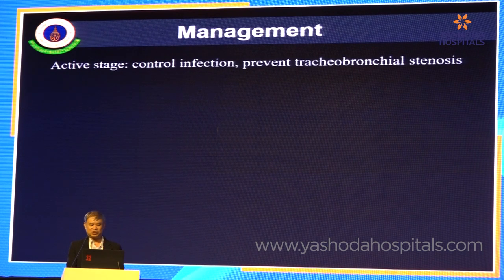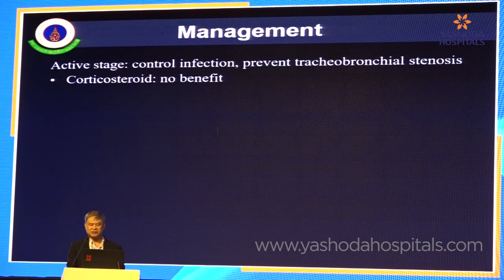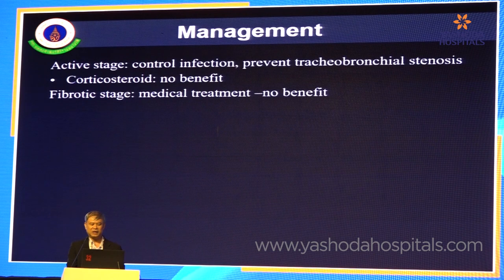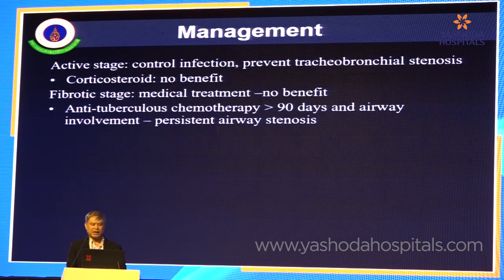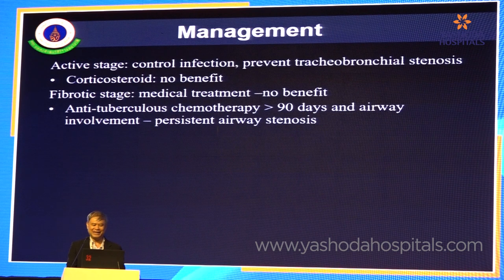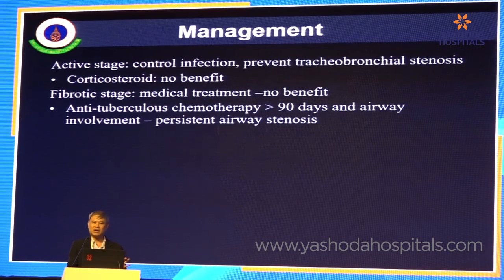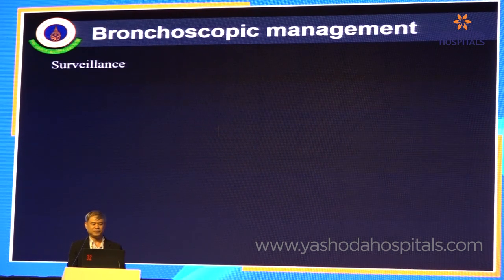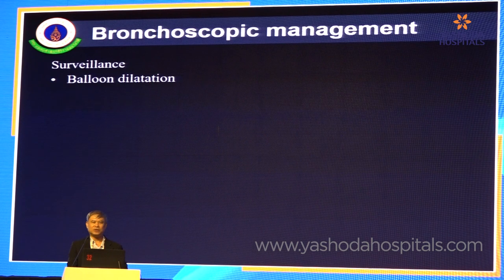In the active stage, you need to control infection and prevent endobronchial stenosis. Corticosteroids do not help in this situation. If patients present in the fibrotic stage, medical treatment has no benefit. Anti-tuberculous chemotherapy for more than three months in patients with airway involvement predicts persistent airway stenosis — meaning you cannot predict whether patients will develop airway stenosis before three months of treatment. So if you suspect endobronchial tuberculosis, you can do surveillance bronchoscopy.